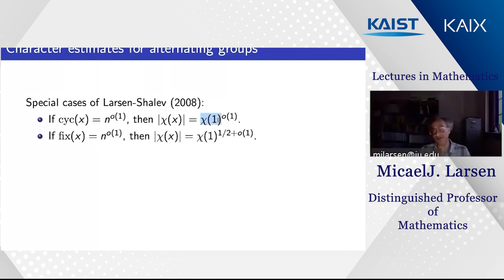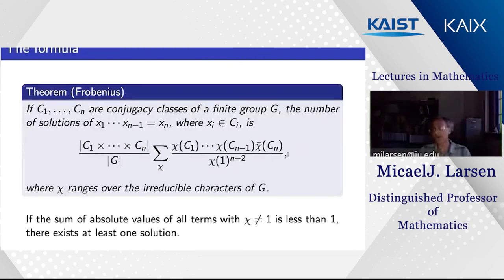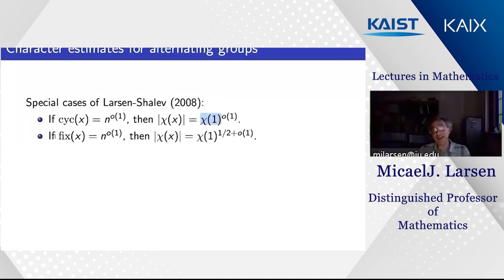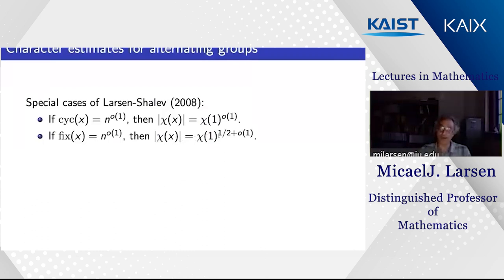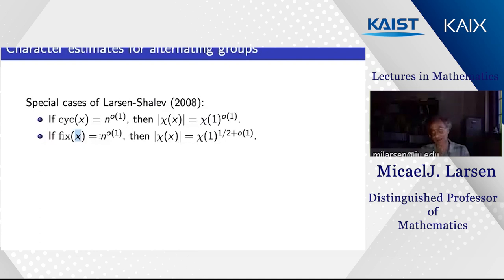Here is another estimate: if an element x has few fixed points compared to n — even if it has many 2-cycles or 3-cycles — the bound is weaker: |χ(x)| can be close to √(χ(1)). The Frobenius formula is not sufficient on its own; you have to handle classes with many fixed points by other techniques as well. For groups of Lie type, character estimates of the form |χ(x)| ≤ χ(1)^{1-c} hold when the centralizer of x is small — specifically when |C_G(x)| < √|G|, which is typical for almost all elements.